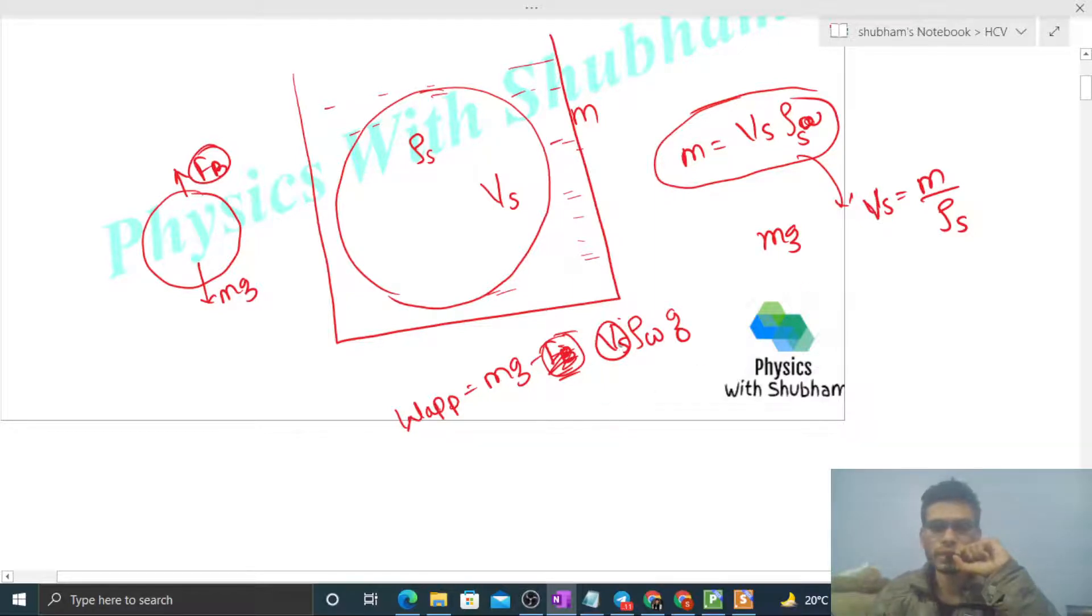So we can replace this by small m divided by density of solid. You can see mg here and mg there, so mg can be taken common. It will be 1 minus rho w divided by rho s. That is your apparent weight.